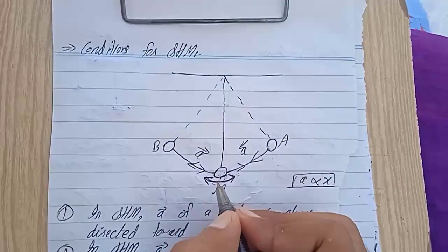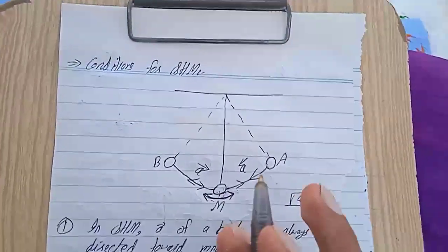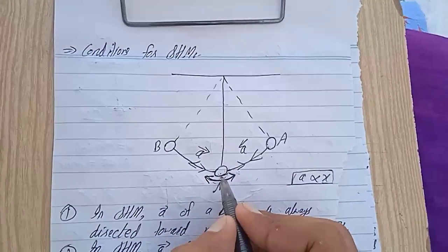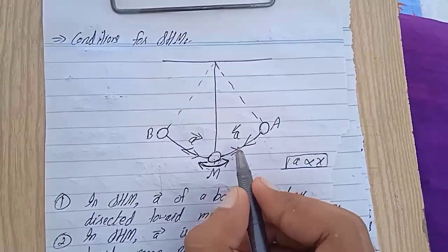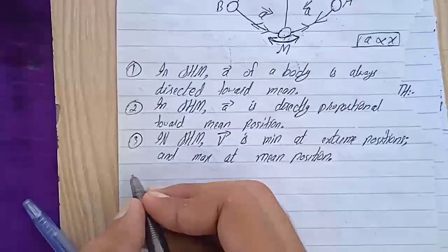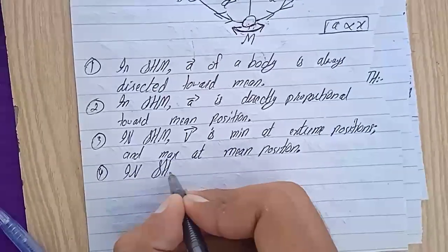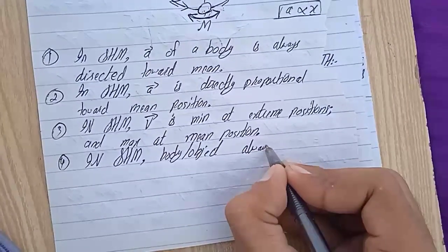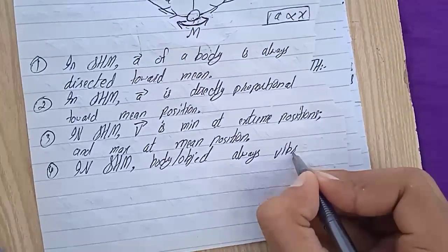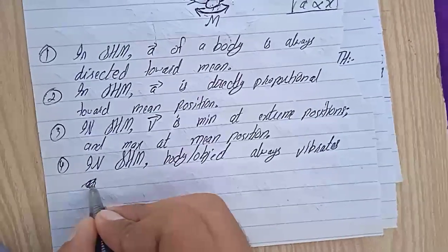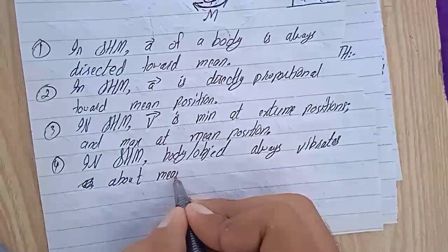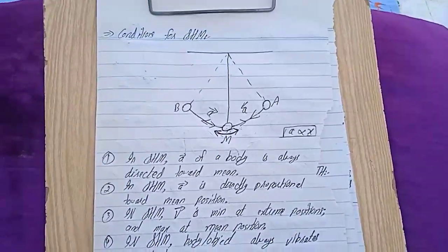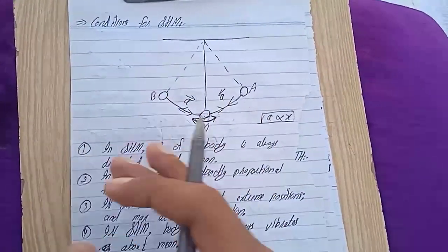So what is the fourth point we have to write? In SHM, body or object always vibrates about mean position. So we have studied what are the conditions for SHM.